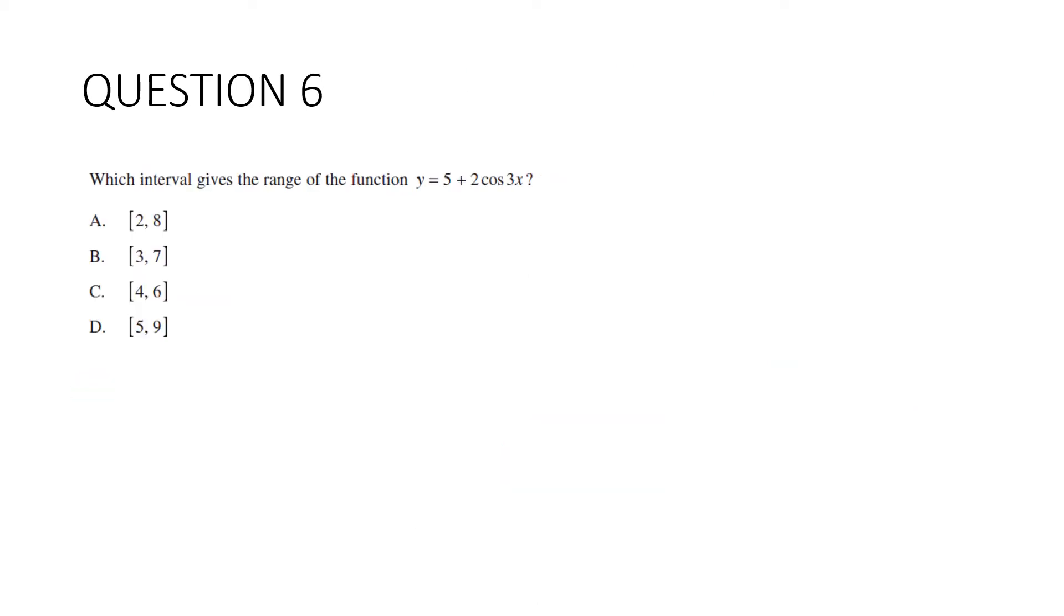Question six: Which interval gives the range of the function y equals 5 plus 2 cos 3x? We've got a number of things going on here. We have a vertical translation, a stretch or dilation in a vertical direction, and here we have a stretch or dilation in a horizontal direction. This one here, this 3x, is not going to affect the range at all. It'll actually just affect the domain. So we can ignore that one.